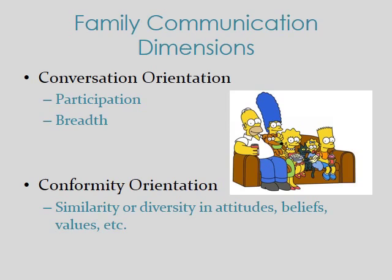Family communication dimensions, much like the four-column charts we frequently see in class, fall along two axes: conversation orientation and conformity orientation. Orientation simply means a way of relating to something. Conversation orientation is the degree to which you are engaged in participation and breadth of conversation—meaning, does your family have a lot of conversation about a lot of topics?